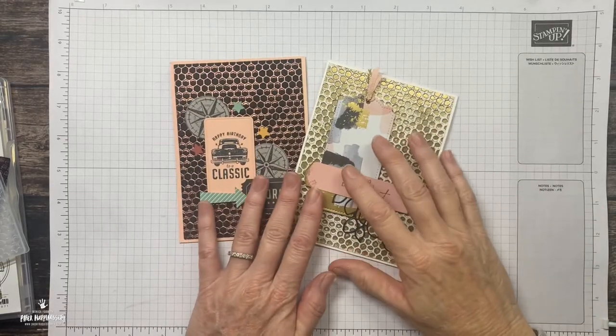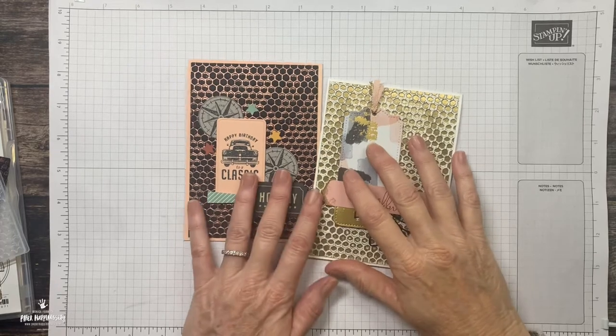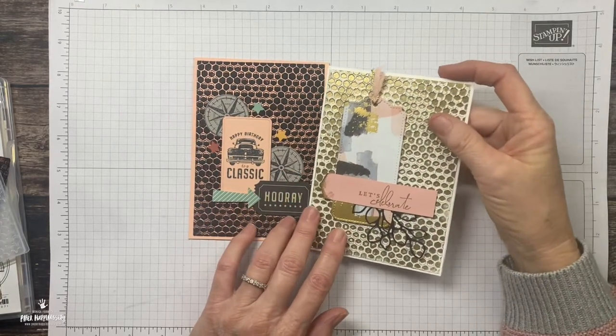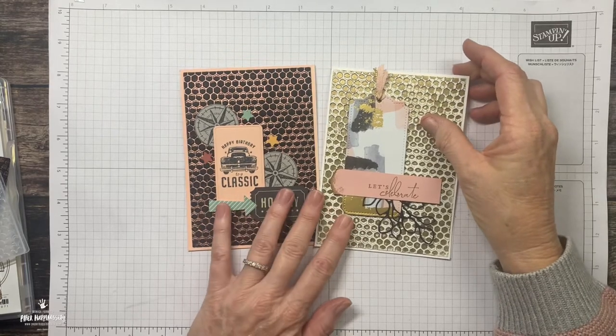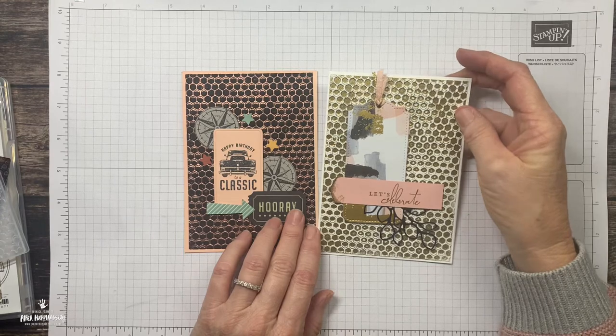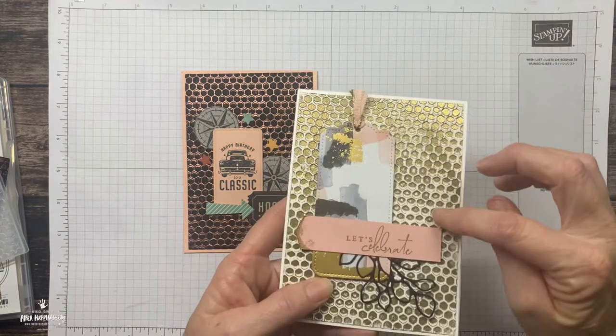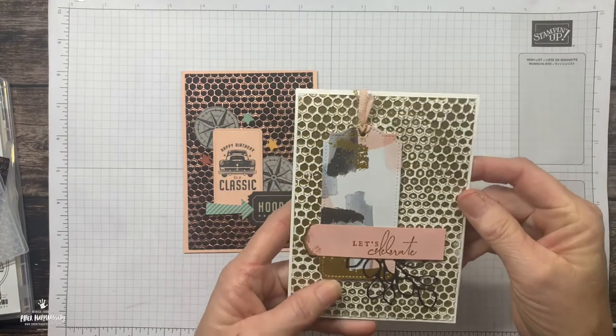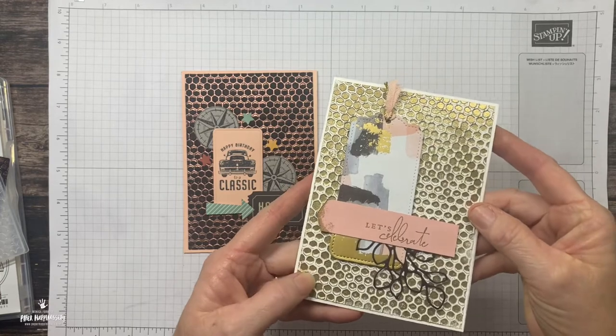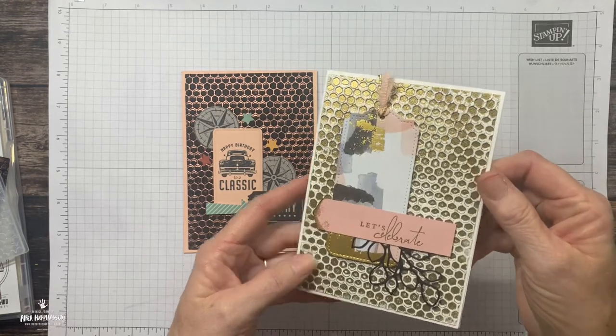Hello everyone, welcome and thank you for joining me today. My name is Monica Formosa and I'm a Stampin' Up demonstrator here in the Whitsunday Bay region of Queensland, Australia. Today I want to show you a cool technique that I've recently discovered which uses your embossing folders to create amazing backgrounds.